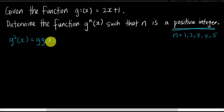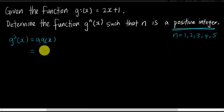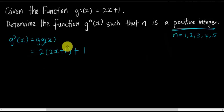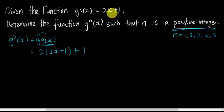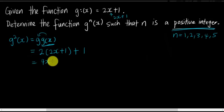g(g(x)) basically means substituting g(x) into g(x). So I substitute 2x plus 1 into the x. This gives me 2 times (2x plus 1) plus 1, which is 4x plus 2 plus 1, equals 4x plus 3. So g²(x) = 4x + 3.